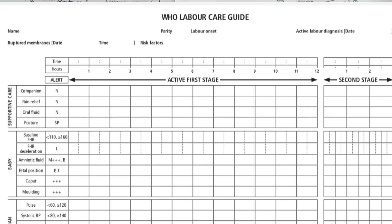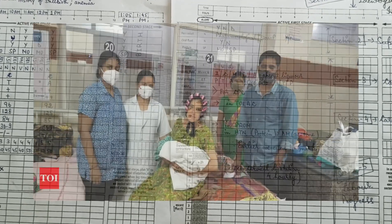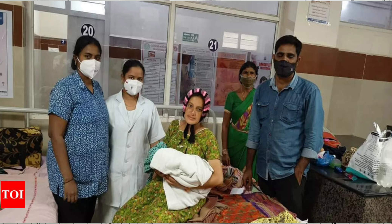The WHO labour care guide should be started — that is, plotting should begin — when the cervical dilatation is 5 cm, that is in the active phase of the first stage of labour. It should be filled at all levels of care — primary, secondary, or tertiary — wherever normal progress of labour is taking place.